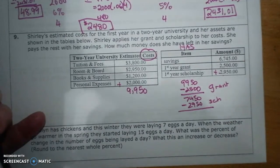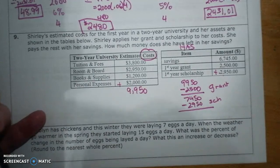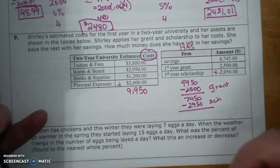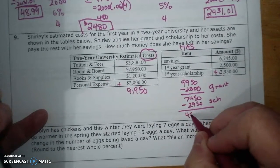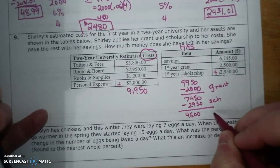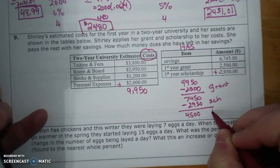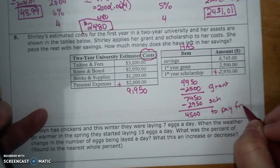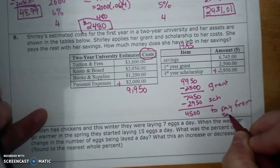So minus $2,500, and I have $7,450. And now I'm going to use my scholarship, minus $2,950 for my scholarship, and I'm going to do $7,450 minus $2,950, which is $4,500 to pay from savings.